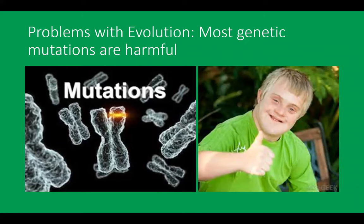In addition, most genetic mutations are harmful. For example, genetic mutations can cause any number of diseases, such as cancer, cystic fibrosis, or Down syndrome. The likelihood that non-directed mutations would actually increase the chances of survival for a certain species is quite low because most genetic mutations are harmful. And if the theory of evolution says that animals evolve through survival of the fittest and most genetic mutations are harmful, then the odds of survival for any single species is actually quite low.